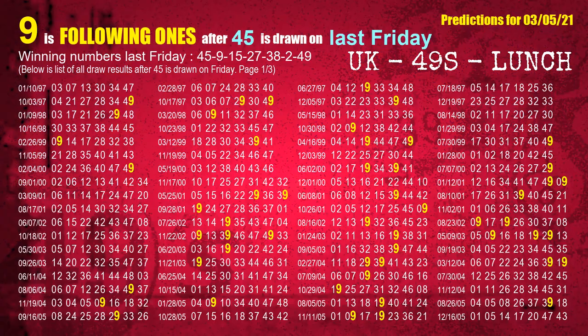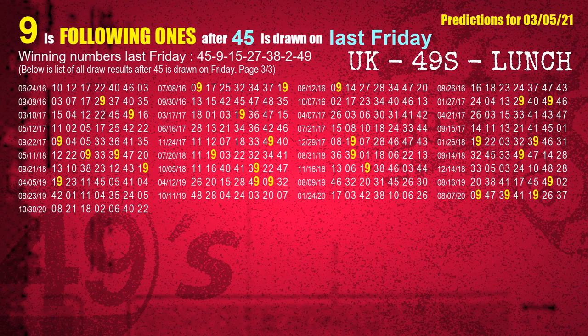After calculating following ones with today's result, we will find out following ones through the result of the same day last week. The first winning number last Friday is 45. We list all draw results which are one week after a Friday draw with 45 as a winning number. The most frequently following units digit is 9 when 45 is the winning number on last Friday. We also highlight the units digit 9 in yellow for you.